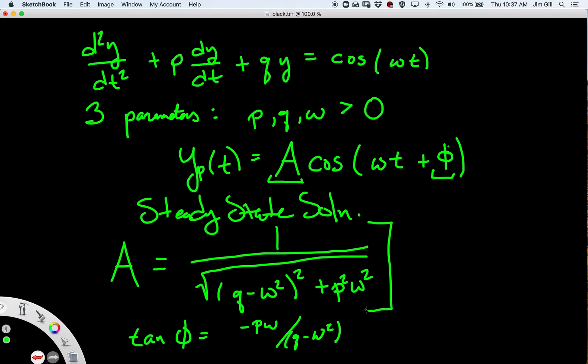Let's think about what's going on here. The variables are only in the bottom, so when the quantity q minus omega squared is small or the quantity p squared omega squared is small, that's going to tend to make our A larger. So let's take a look at a picture of this in Wolfram Alpha.